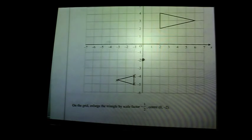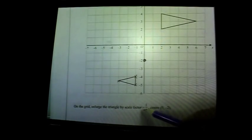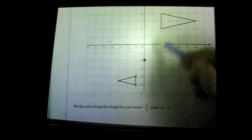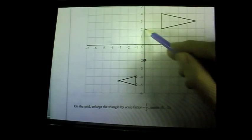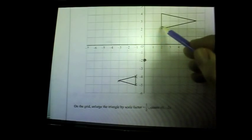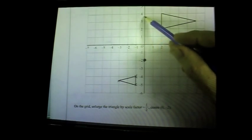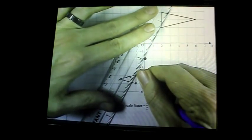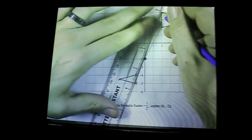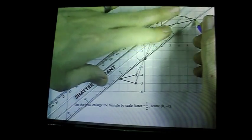Question twenty-three: negative enlargement with scale factor −½, centre (0, 2). Negative means it goes back through the centre point and out the other side. From a vertex to the centre you go across 2 and down 4 — halve that to get across 1 and down 2, placing the new point on the other side. Repeat for each vertex. You can check by drawing lines through corresponding points — they should all pass through (0, 2).